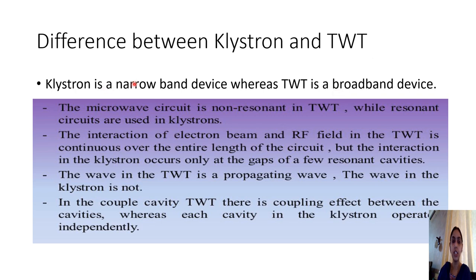The first difference is that the klystron is a narrow band device whereas the traveling wave tube is a broad band device, capable of generating power over wider ranges. The microwave circuit is non-resonant in a traveling wave tube, while resonant circuits are used in klystrons. In the klystron we have many resonant cavities, but in the traveling wave tube there is no such resonant structure.